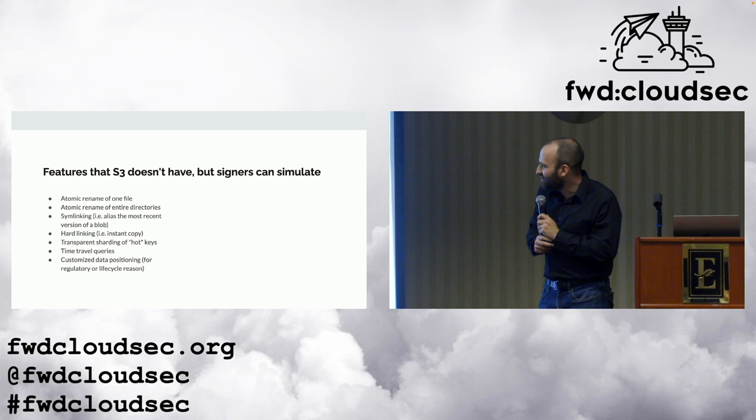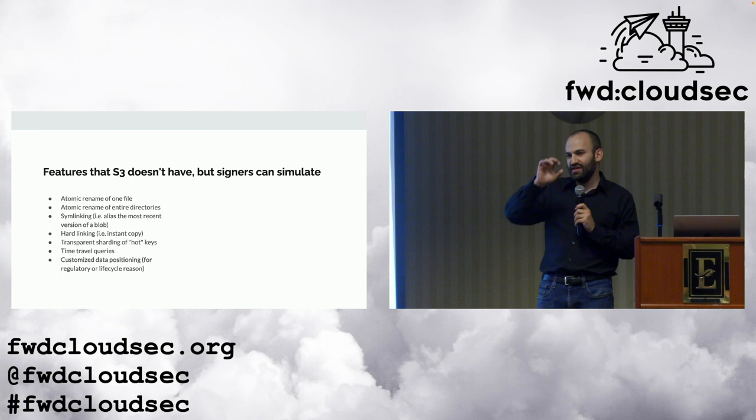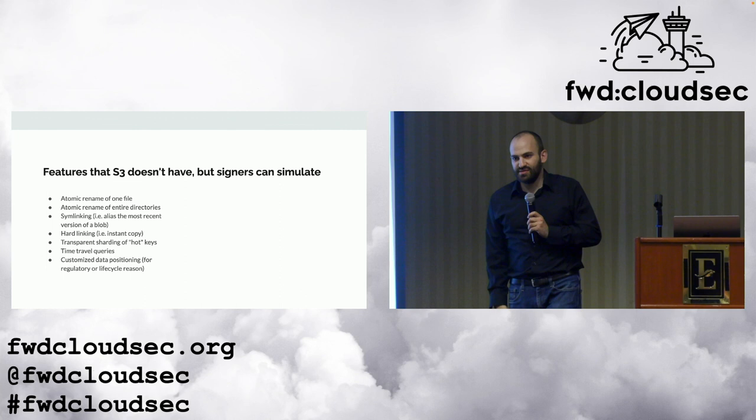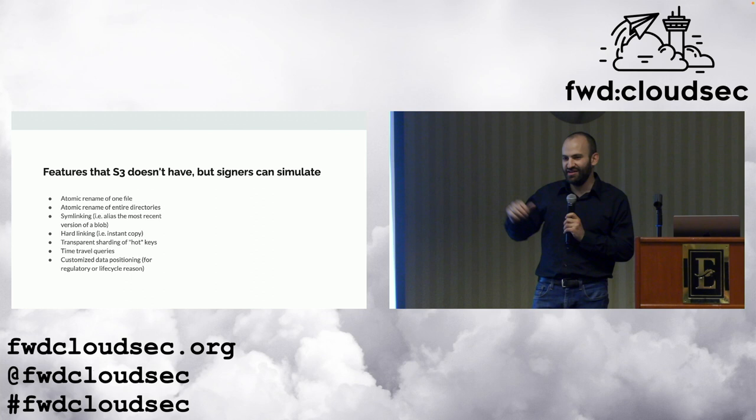And my data geekery coming in: there are a bunch of features S3 doesn't have — like if you've ever said 'I really wish I could rename something in S3' or 'move an entire prefix from point A to point B in one go' — it's impossible, it's not something provided by the S3 API. But with a signer you can emulate all of this. If you want to get fancy, you can build an entire abstraction layer in front of your S3 bucket, and I find that really fun. With that — thank you so much! Who has questions?